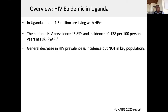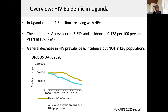However, this has not been the case among key populations. The graph extracted from the UNAIDS 2020 report does still show a downward trend in the number of new HIV infections and AIDS-related deaths in Uganda.